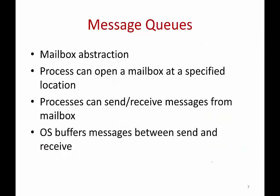Another mechanism is that of message queues. A message queue is nothing but a mailbox. A process can open a mailbox at a certain path name, and then other processes can send messages to the mailbox while this process can receive messages from it. You have the send abstraction and the receive abstraction on the mailbox. When a process sends to a mailbox, the operating system buffers these messages and another process can read and receive them. This is another way in which processes can communicate with each other.